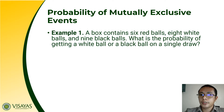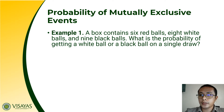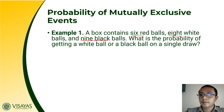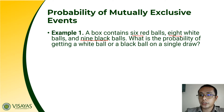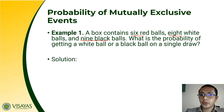For example, in Example 1: a box contains six red balls, eight white balls, and nine black balls. The question is: what is the probability of getting a white or a black ball on a single draw? I want you to try solving this problem, and after which I am going to show you the solution.